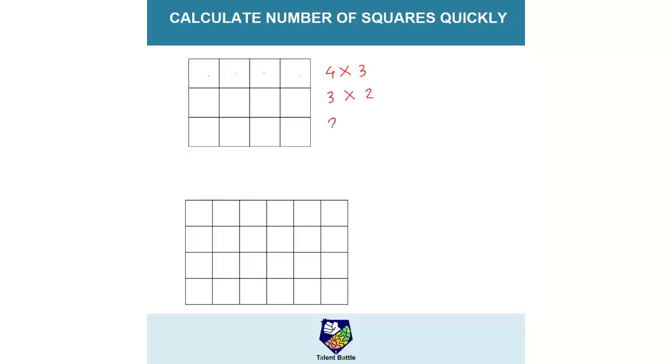Again reduce it by 1. So this will become 2 into 1. You have to reduce unless one of the number, that is rows or column, reaches 1. So 4 into 3 will be 12. This will be 6 and this will be 2. Just add all this. So total number of squares in this particular figure are 20.